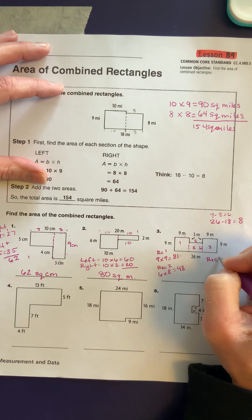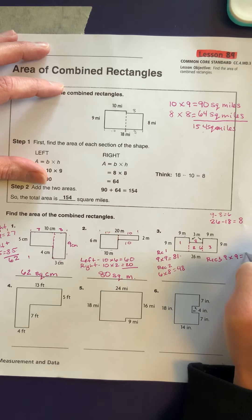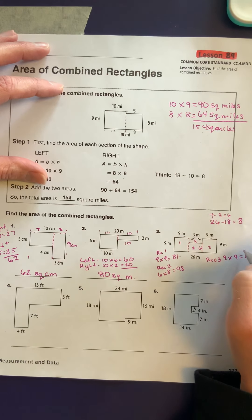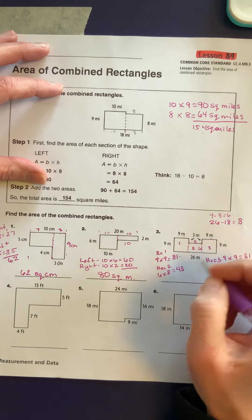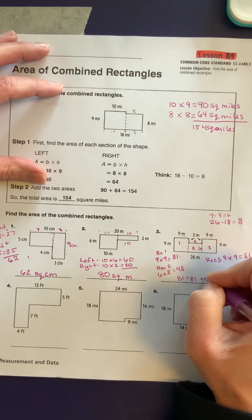And rectangle 3 is again the same, 9 times 9, which gives me 81. So I'm going to add them all together. 81 plus 81 plus 48.